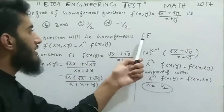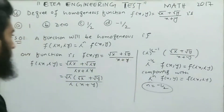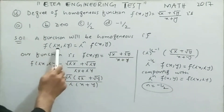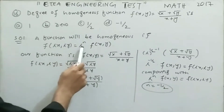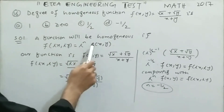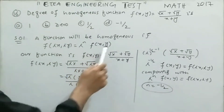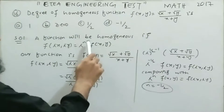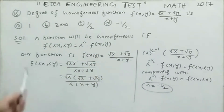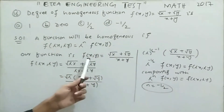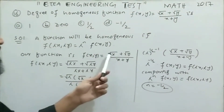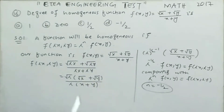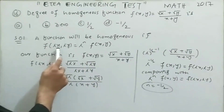A function is homogeneous if it satisfies the definition: f(λx, λy) = λⁿ · f(x, y), where n is the degree of the homogeneous function. Our original function is f(x, y) = (√x + √y) / (x + y). According to the definition, we replace x with λx and y with λy.